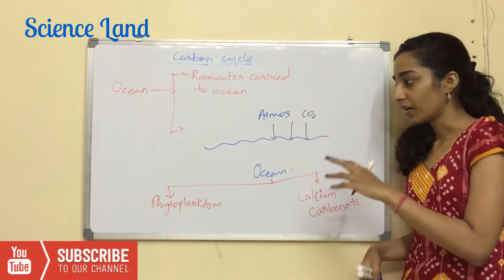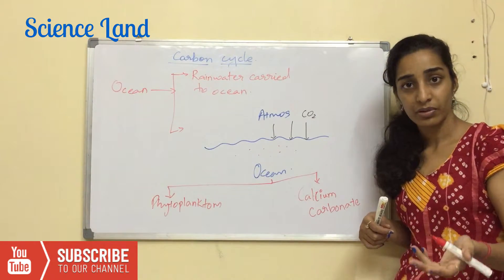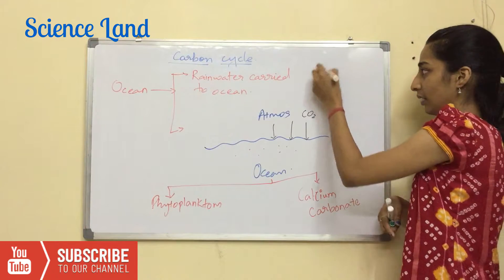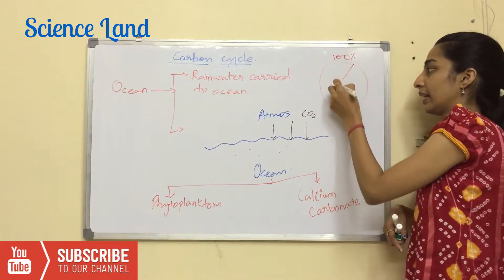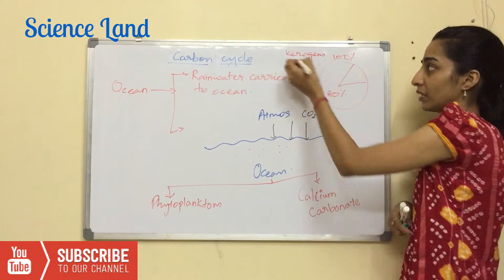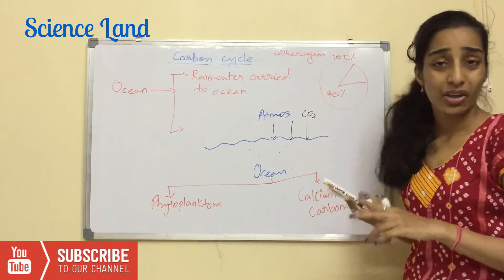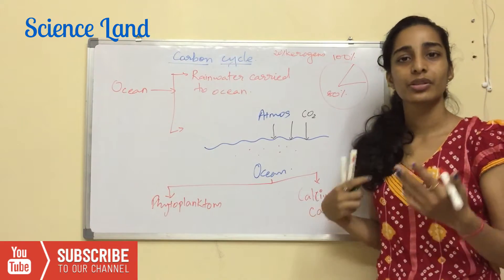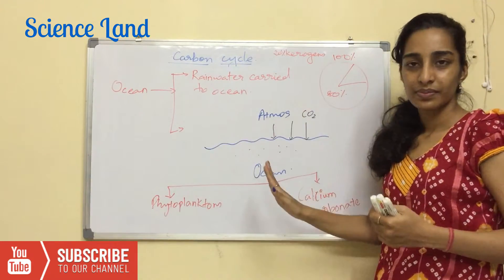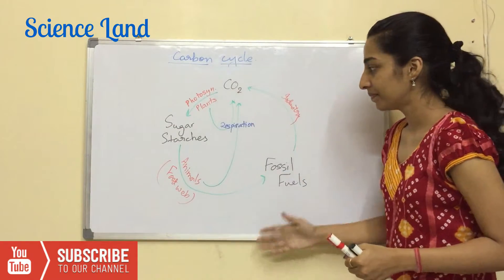That is why the ocean is known as a carbon sink. If you have a question asking for the two sources of carbon — the ocean is the biggest. About 80% of dissolved carbon is used to make calcium carbonate, and 20% is used by kerogens. The other major source of carbon is fossil fuel.